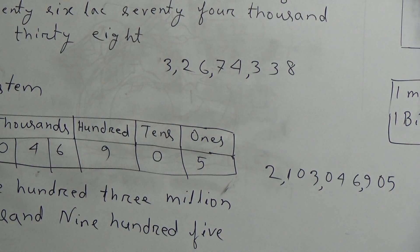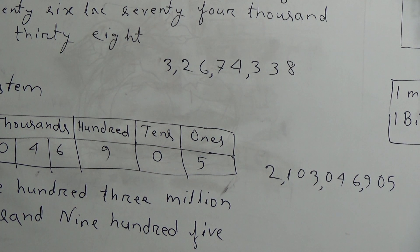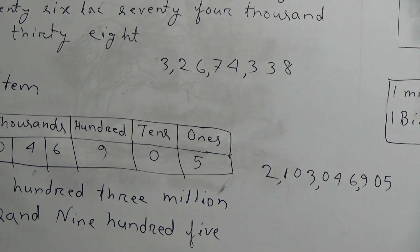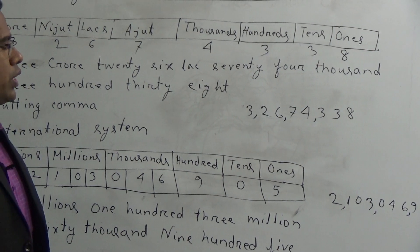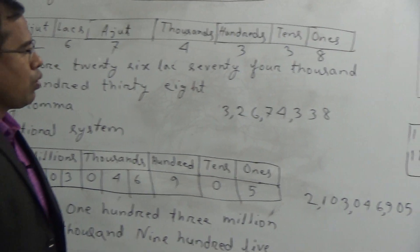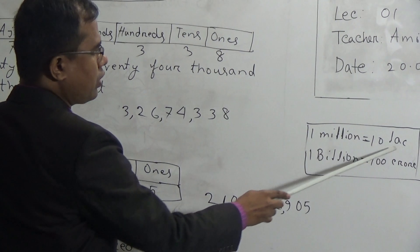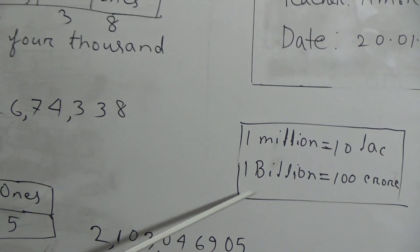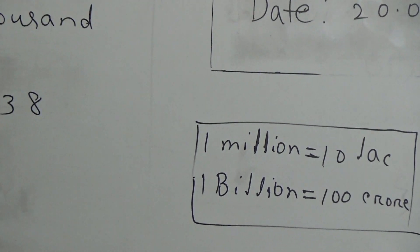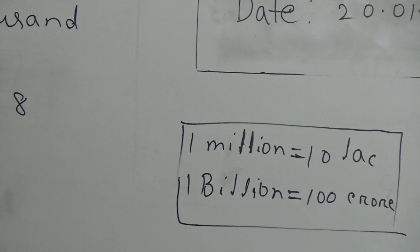Now, students, we want to convert one million to the national method. One million is an international term. If we convert one million to the national method, one million is equal to ten lakh.